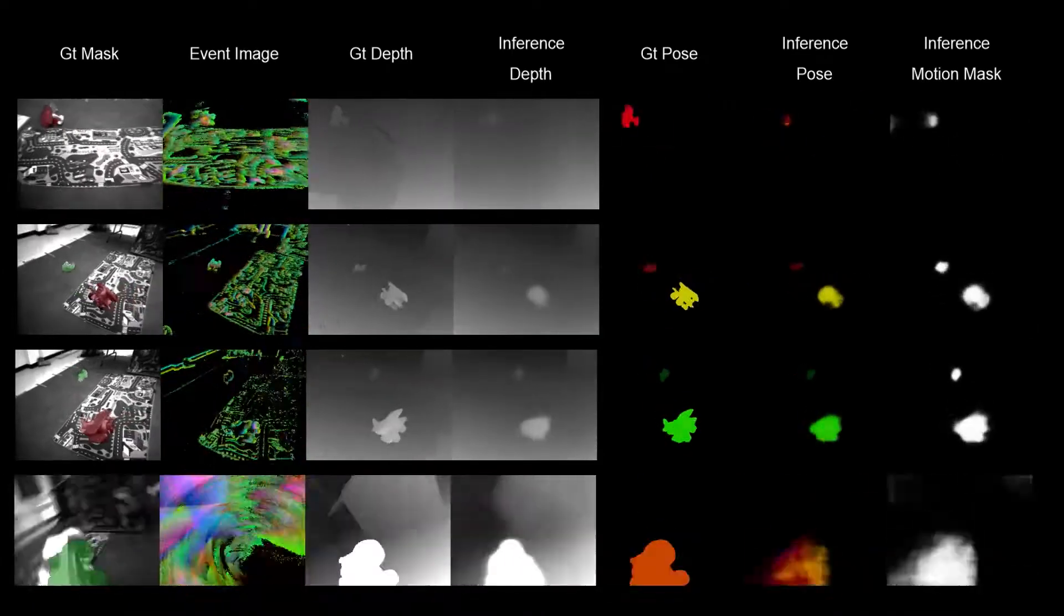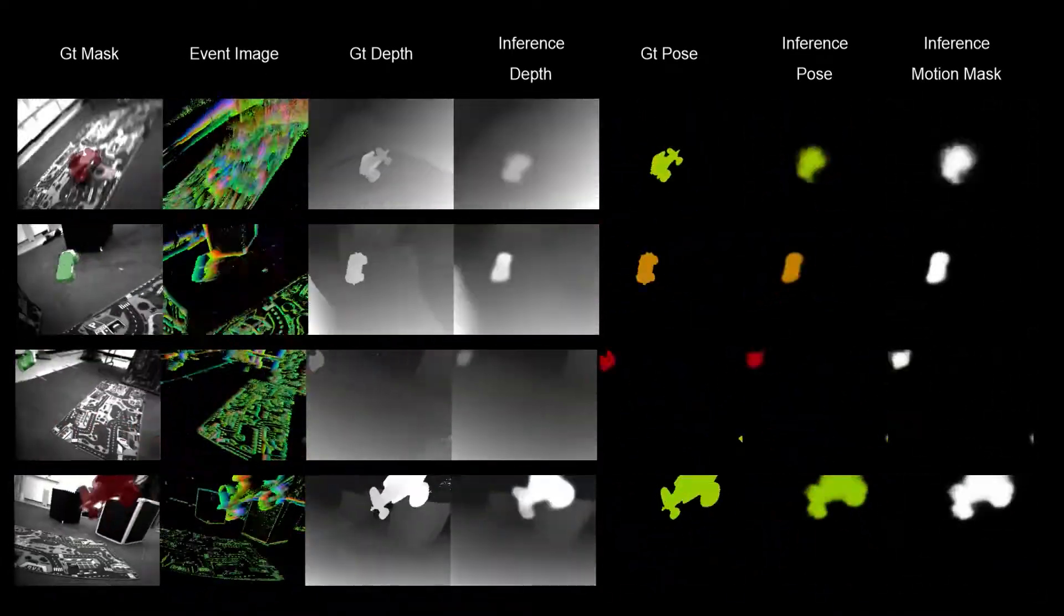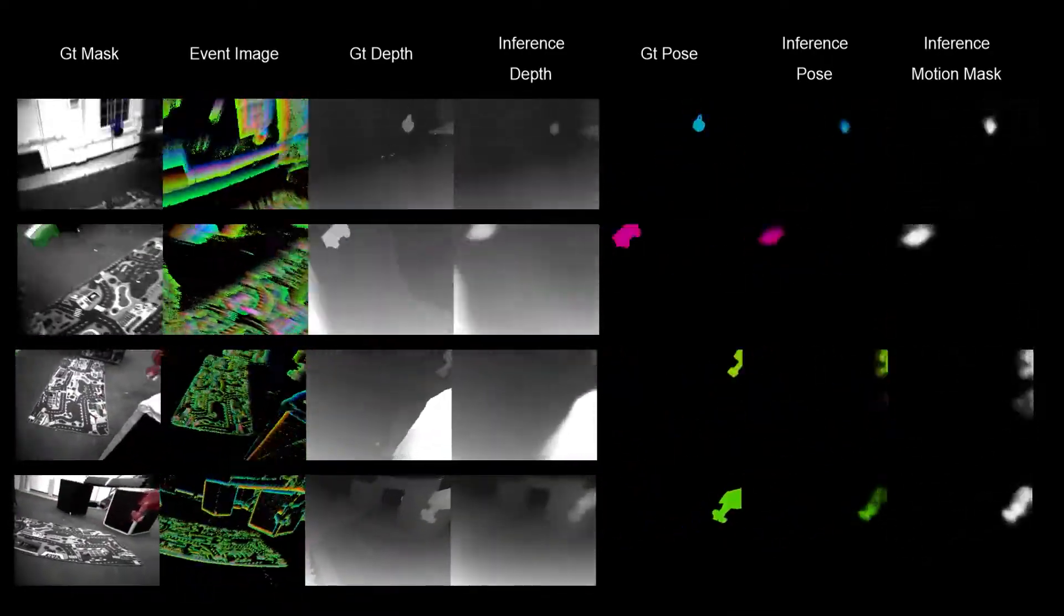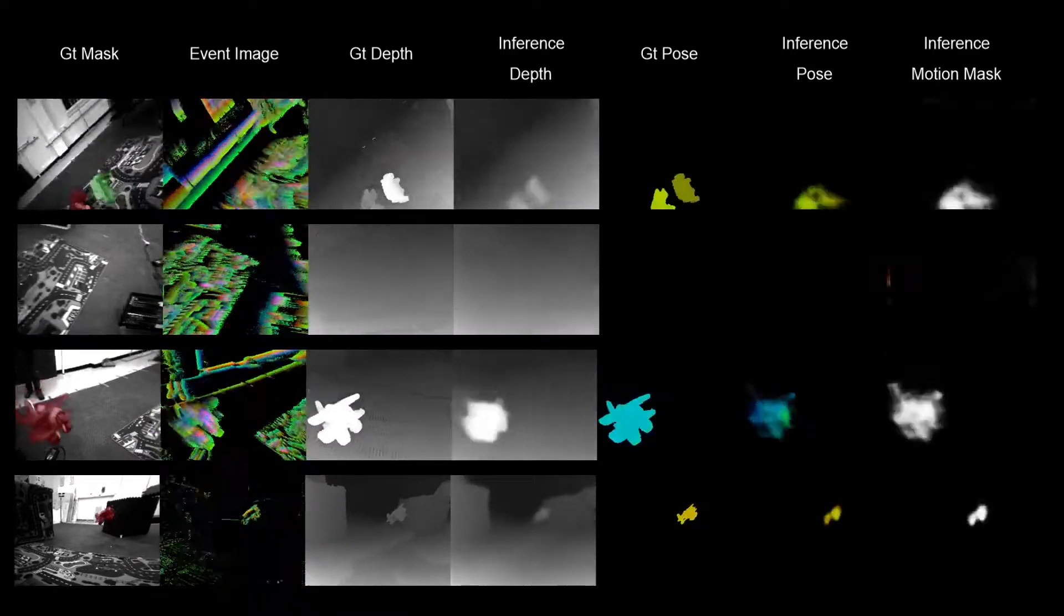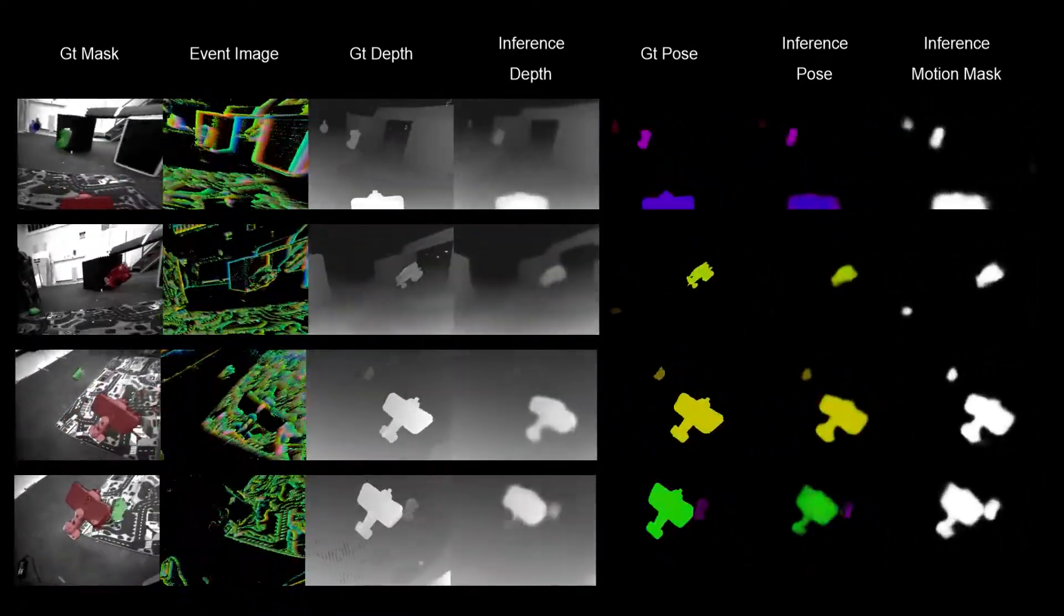Here you see qualitative results from our algorithm. From left to right, shown are the ground truth mask, the event slice, the ground truth depth, the output depth, the ground truth object pose, the output object pose, and the output motion mask.